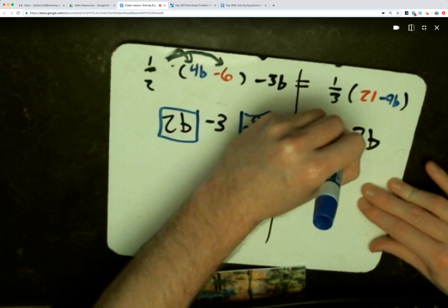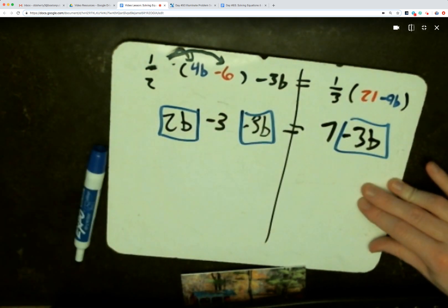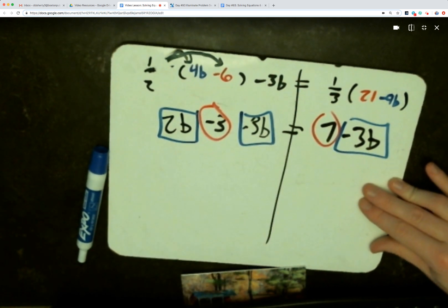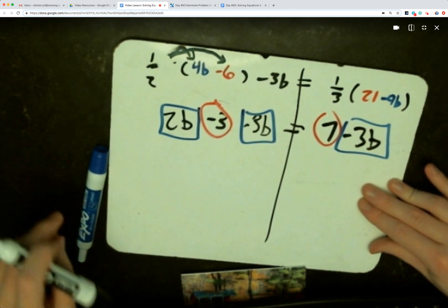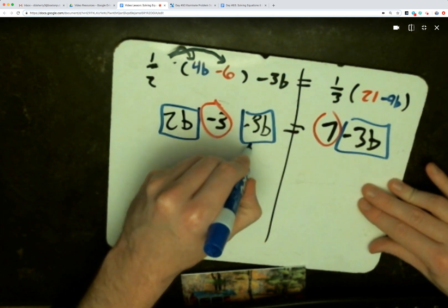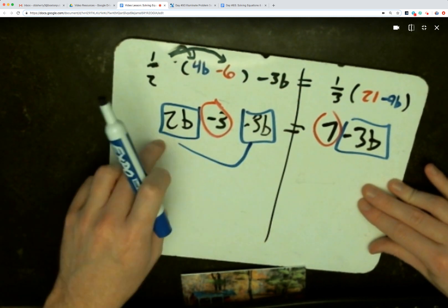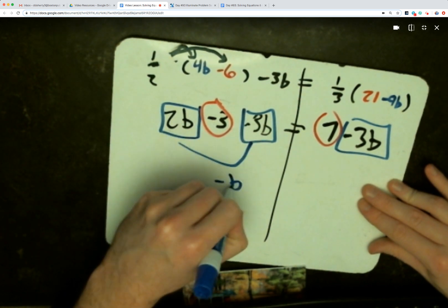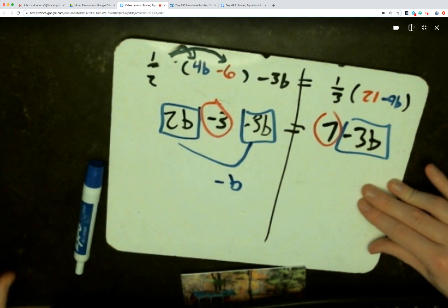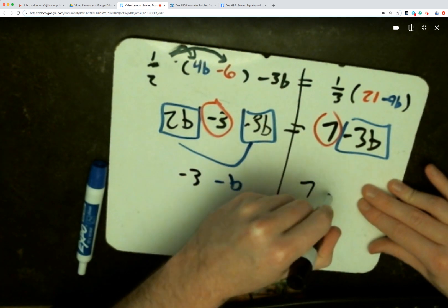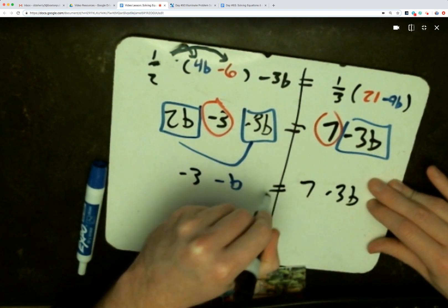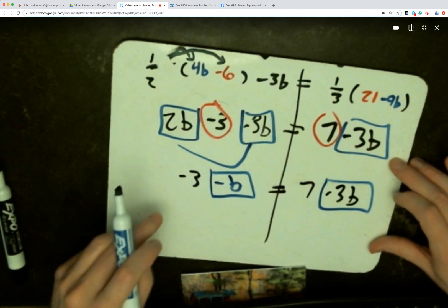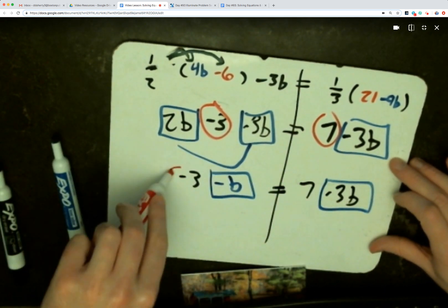At this point, hopefully your brain is recognizing there are three variable terms, those are in blue boxes. There are two constant terms, I put those in red circles. If I've got three variable terms and two sides of the equation, some of them must be gathered. In this case the 2b and the negative 3b are on the same side. 2 minus 3 gives us negative b. The negative 3 is still there, that comes down. Then 7 minus 3b comes down. And now we see two variable terms instead of three, simplified the equation, and the two constants are also on opposite sides, we need to use inverses.